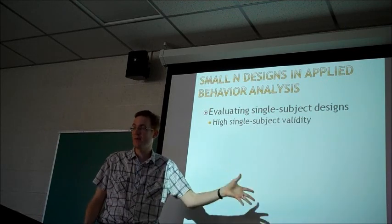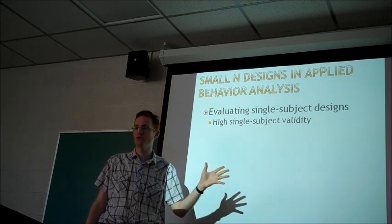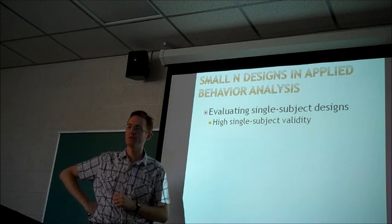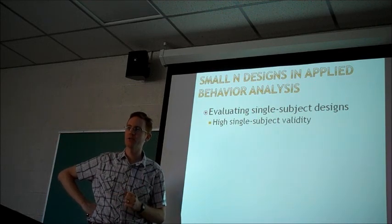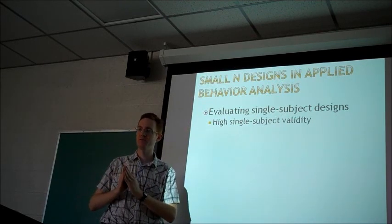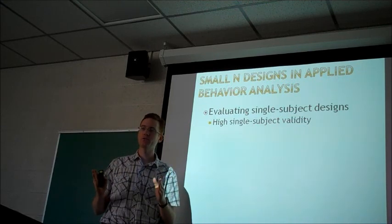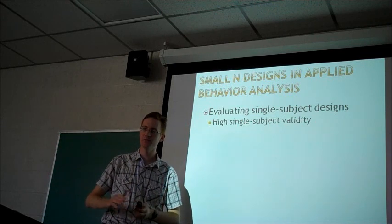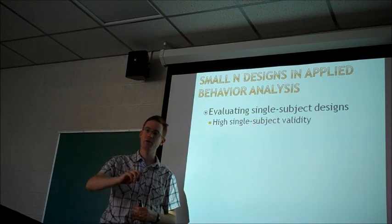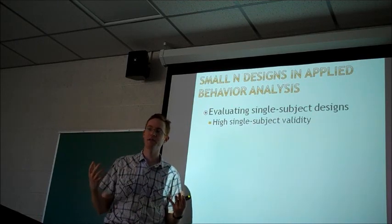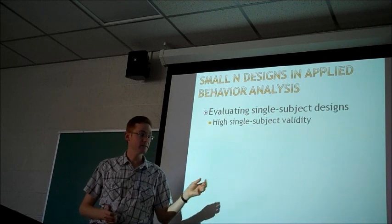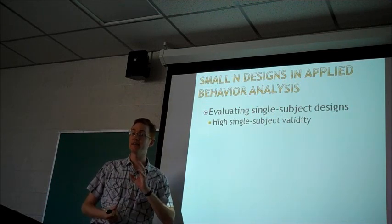We talked earlier about the issue you can run into with large-N designs, where something might look like gradual learning when studying a group of students — but that's because you're looking at the average behavior of many students who learn at different rates. When you look at an individual student, they go through a quick burst of learning: instead of a slow gradual curve, they go pretty quickly from not understanding a concept to grasping it and getting many correct answers. Doing single-subject and small-N designs is really the only way to get that type of validity.